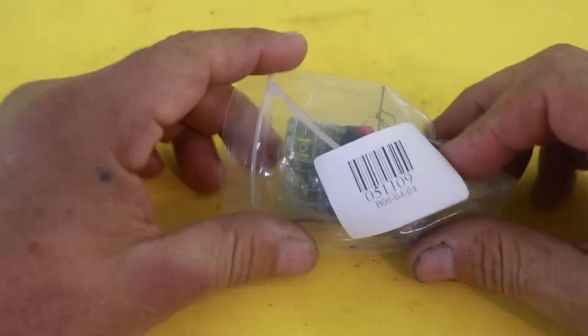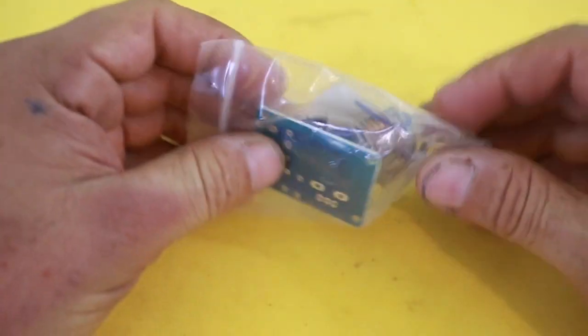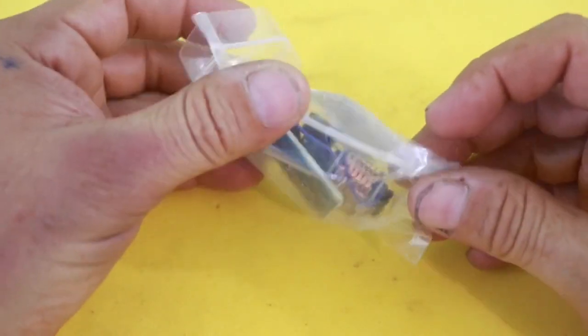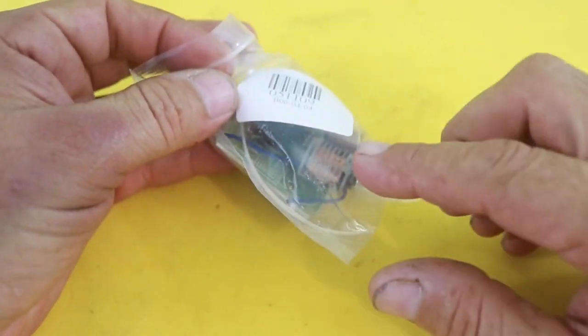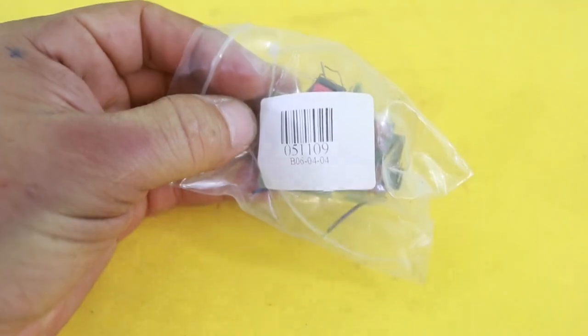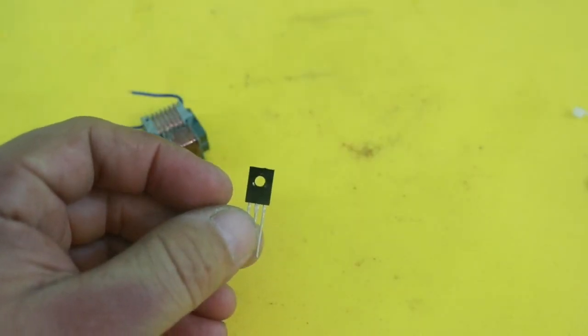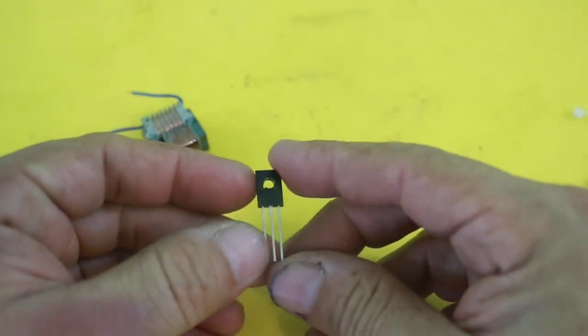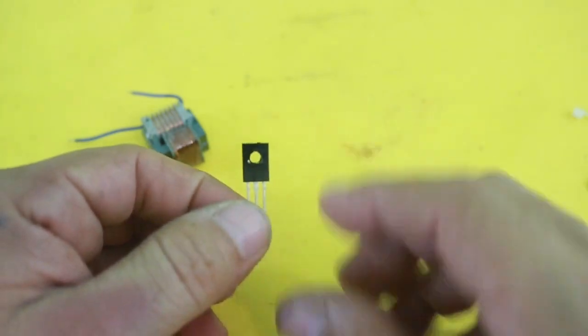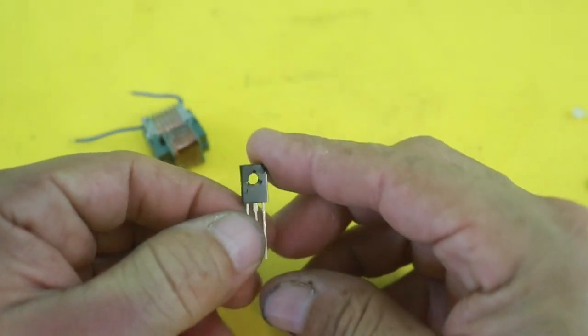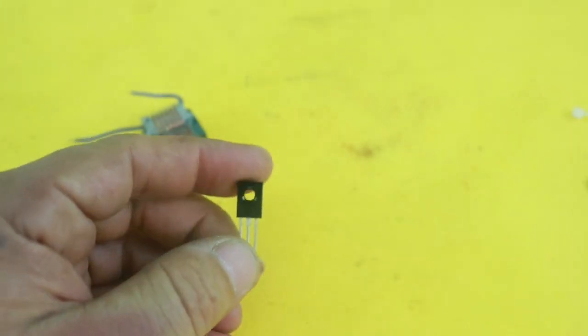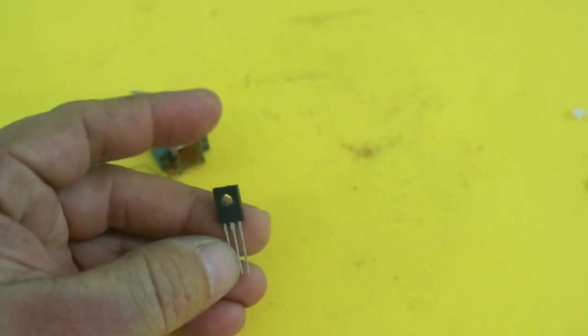It comes disassembled but that is good for our purposes because we will only use the transformer and the transistor. We will need two identical transistors for the circuit. This doesn't have a part number but any NPN power transistor will be good for this circuit.